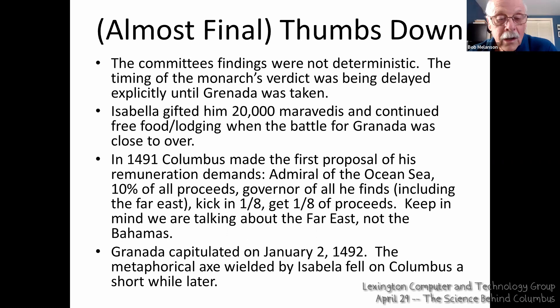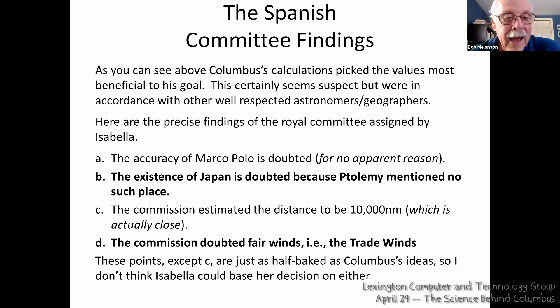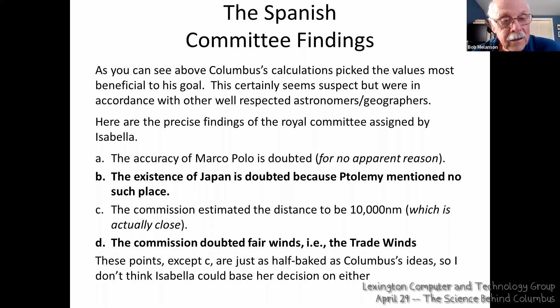But if you think Columbus's proposal had serious shortcomings, let's look at one of the committee's findings. One of them: the existence of Japan is doubted because Ptolemy mentioned no such place — on the other hand, those two respected astronomer-geographers had Japan on their maps of the world. This seems a little strange. And the commission doubted fair winds, i.e. the trade winds. So it's clear that knowledge of the trade winds was very limited at this point, and Columbus was probably the only one who thought he could take advantage of them.